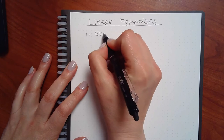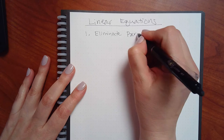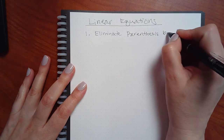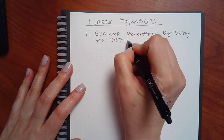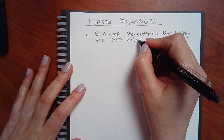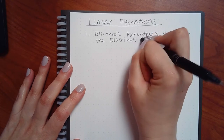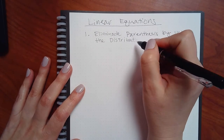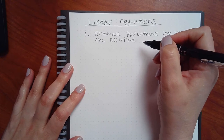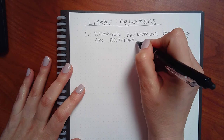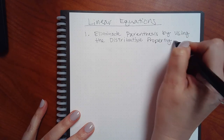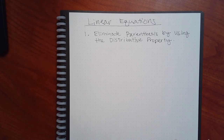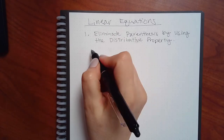Step one is to eliminate parentheses using the distributive property — that's the one where if you see parentheses, you take what's in front and multiply it to everything inside. We'll see some examples in a little bit.